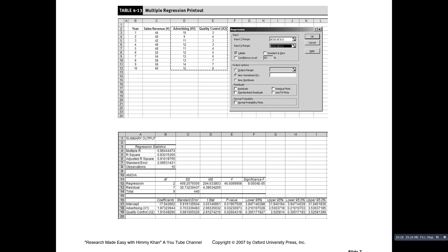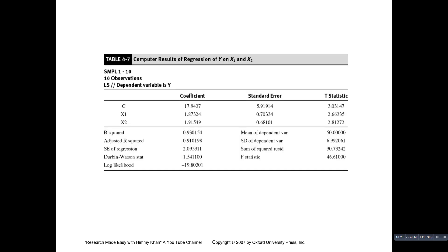This is the SPSS output of the same regression. If you run the regression in SPSS the output will look like this. The intercept coefficient is 17.9437. The coefficient of X1, advertising expenditure, is 1.87 and the coefficient of quality control X2 is 1.91. Both p-values show that these two variables are significant. R-squared is 93% and adjusted R-squared is 91%. The standard error of regression is 2.09. The Durbin-Watson statistic is 1.54 but we are not concerned with this because this is cross-sectional data and autocorrelation is not a major concern. The F-statistic is 46.61, showing that the overall model is significant.